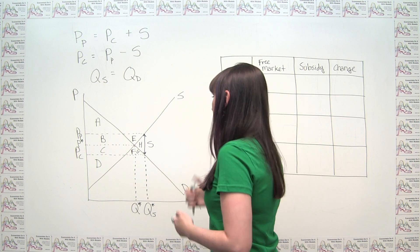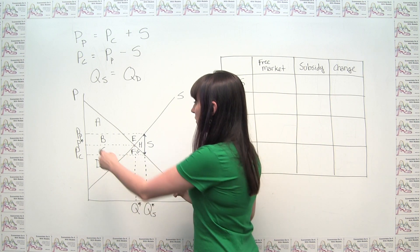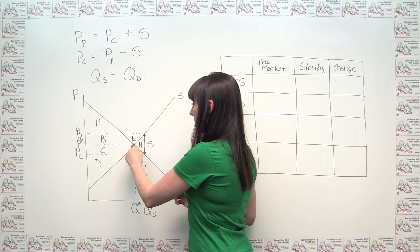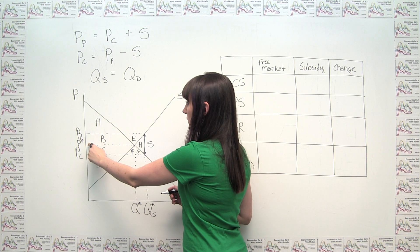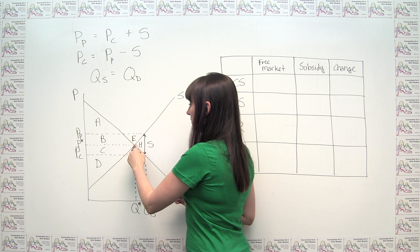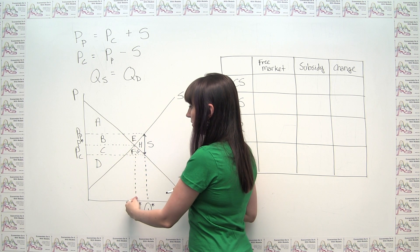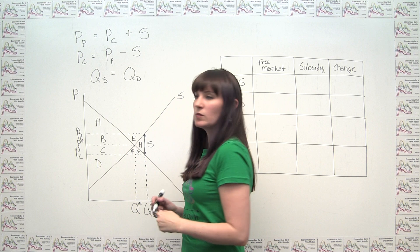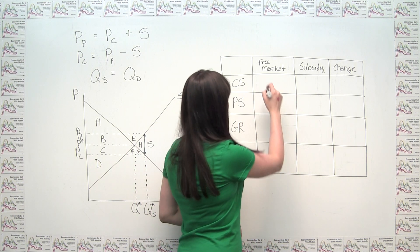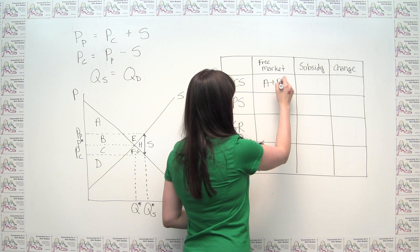So we could look here and we could say, alright, above the price that's relevant in a free market, which is just this price here, below the demand curve, to the left of the quantity being transacted. In the free market, that's going to give consumers A and B. A plus B goes over here.